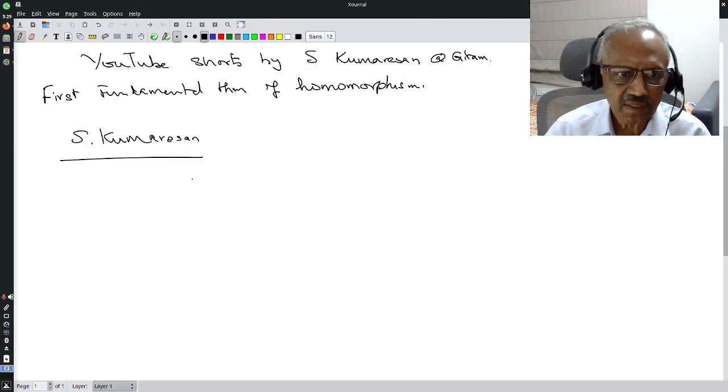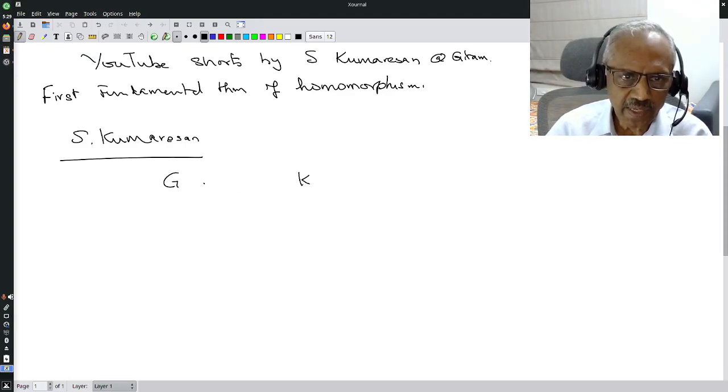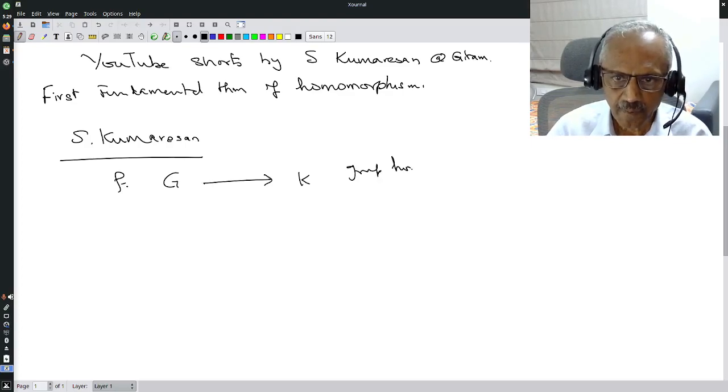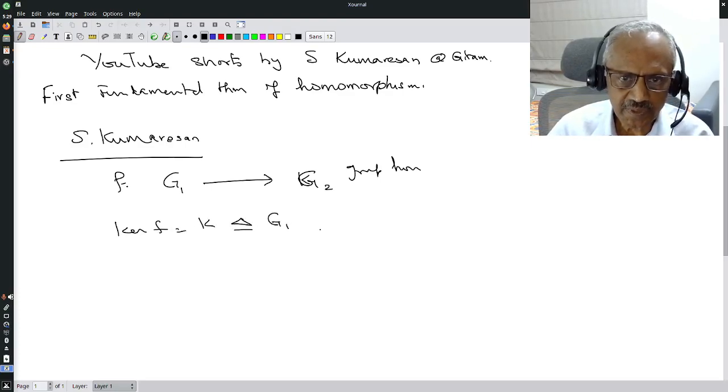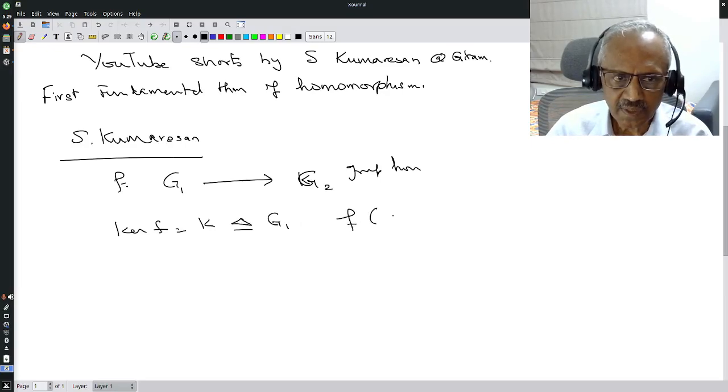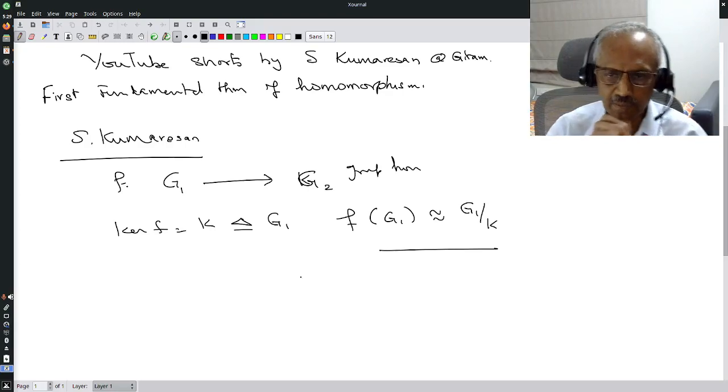So what does it say? Suppose G is a group, K is another group, and this is a group homomorphism G₁ to G₂, and let kernel of F equal to K. Then K is a normal subgroup of G₁. Then what does it say? F of G₁ is isomorphic to G₁ modulo K. This is what the first fundamental theorem of group homomorphism says.